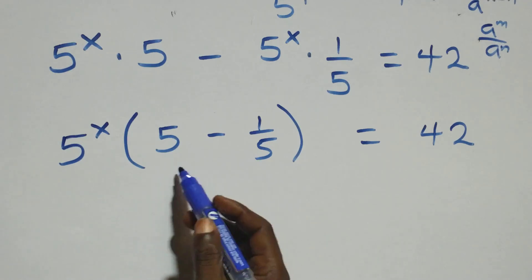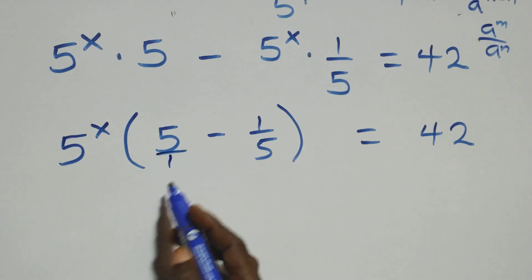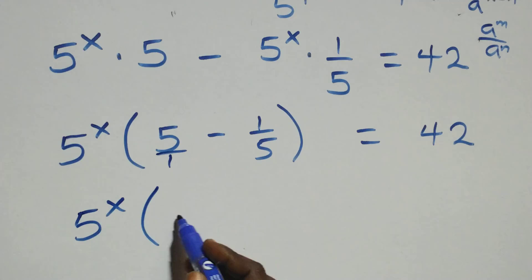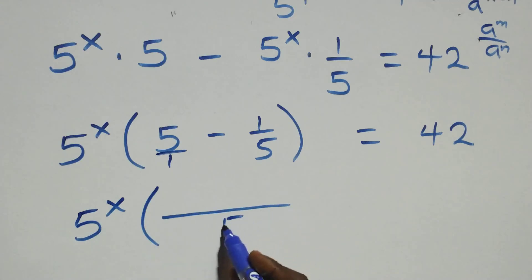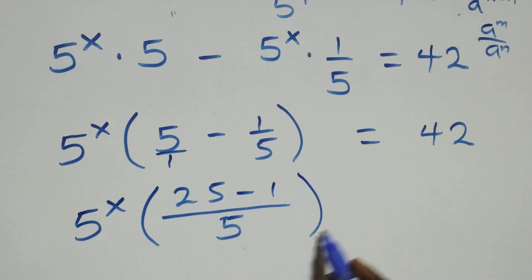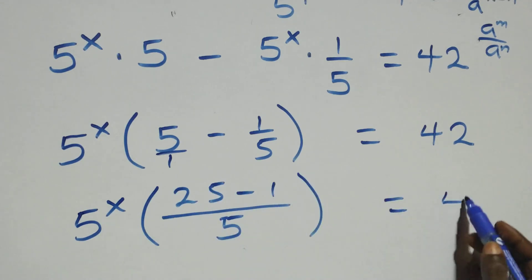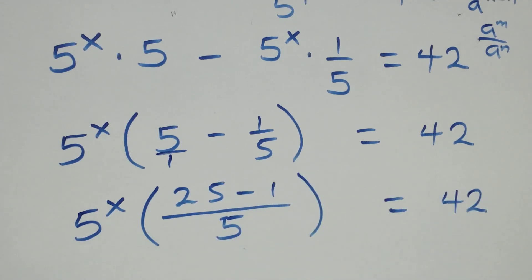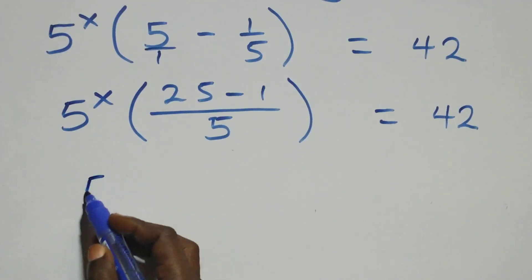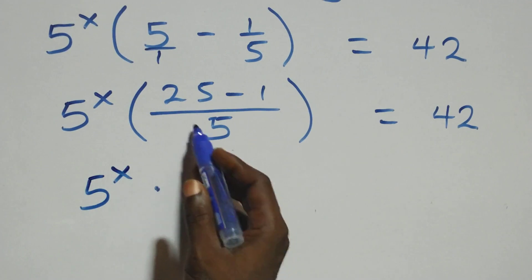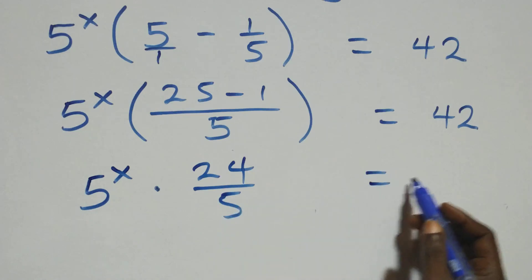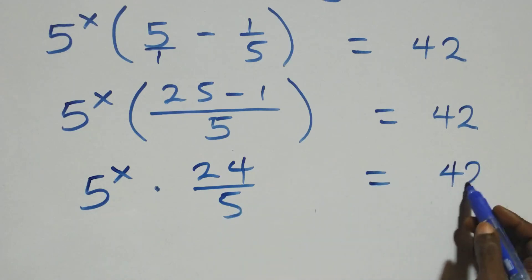Then here we bring this together as one fraction. Here is 5 over 1. So we have 5 raised to power x in brackets — that's made as 5. Then this becomes 25 minus 1, close bracket, equals to 42 on this side.